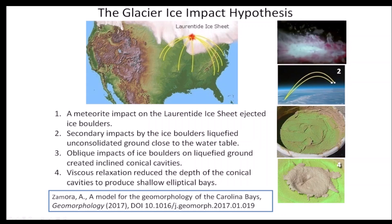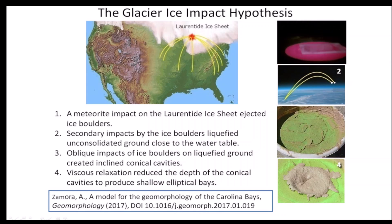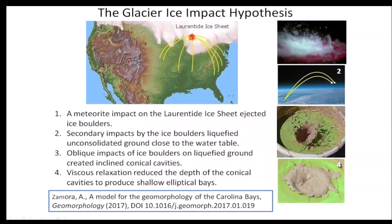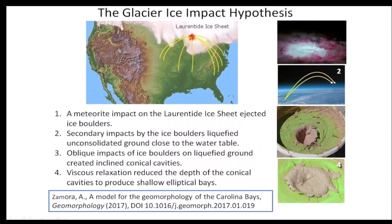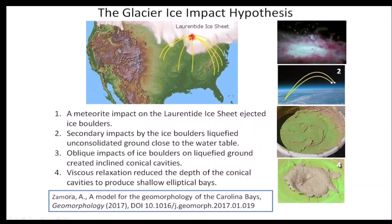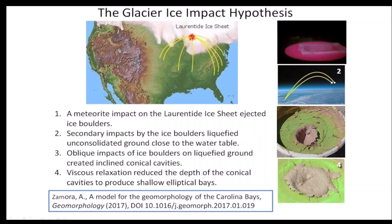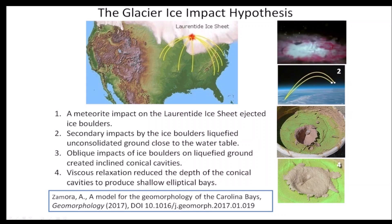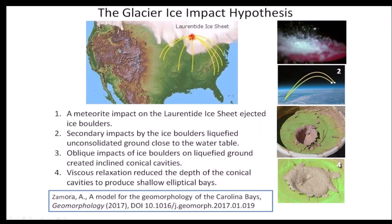Then the secondary impacts of the ice boulders liquefied consolidated ground, and the oblique impacts created inclined conical cavities. Finally, viscous relaxation reduced the depth of the conical cavities to produce shallow elliptical basins.